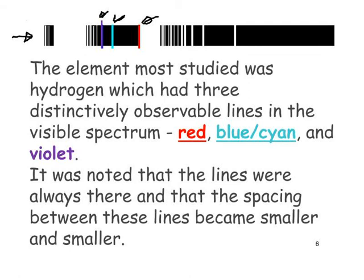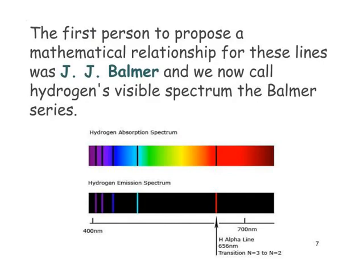It was noted that the lines were always present and that the spacing between them became smaller and smaller — the distance between the lines on the spectrum gets closer and closer. The first person to propose a mathematical relationship for these lines was J.J. Balmer, and we now call hydrogen's visible spectrum the Balmer series. This is the absorption spectrum for hydrogen, and this is the emission spectrum; our emphasis is very much on the emission spectrum.